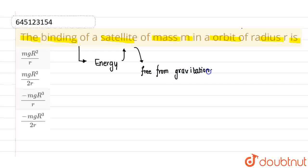Now, if a body is free from gravitational influence, then the total energy for that body should be zero.